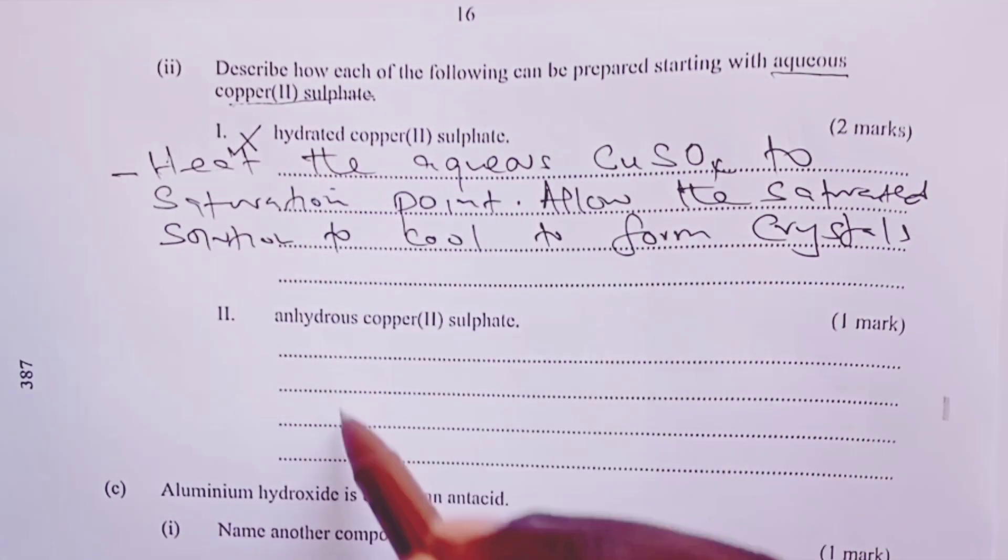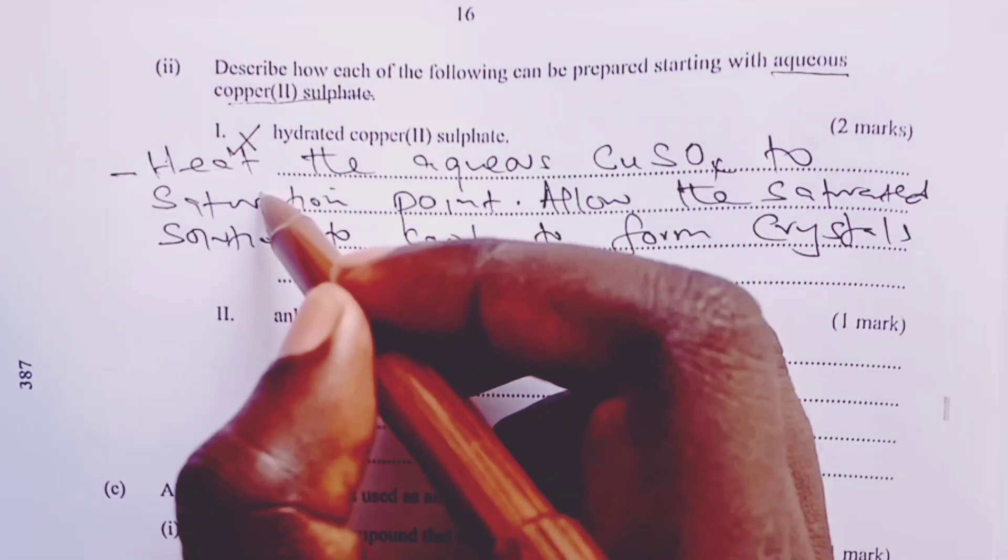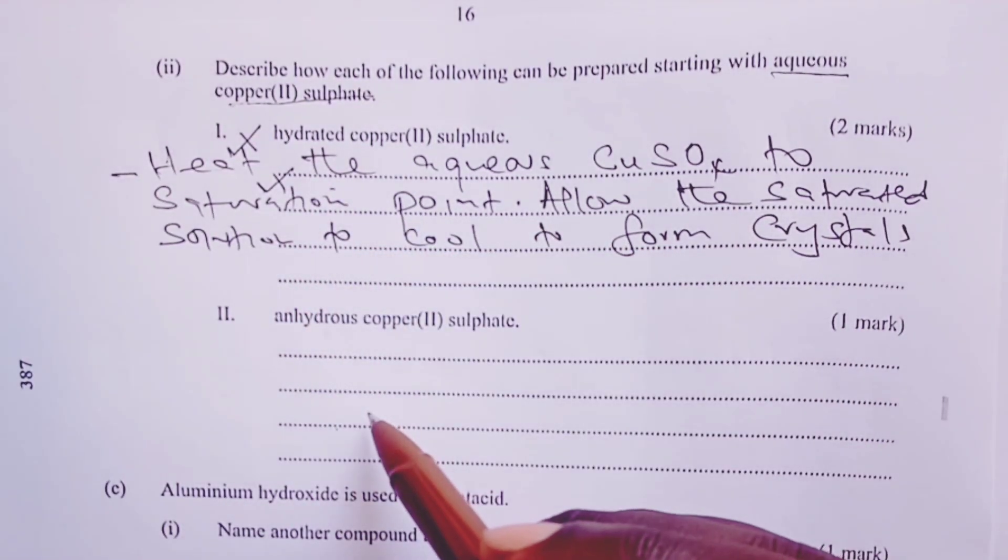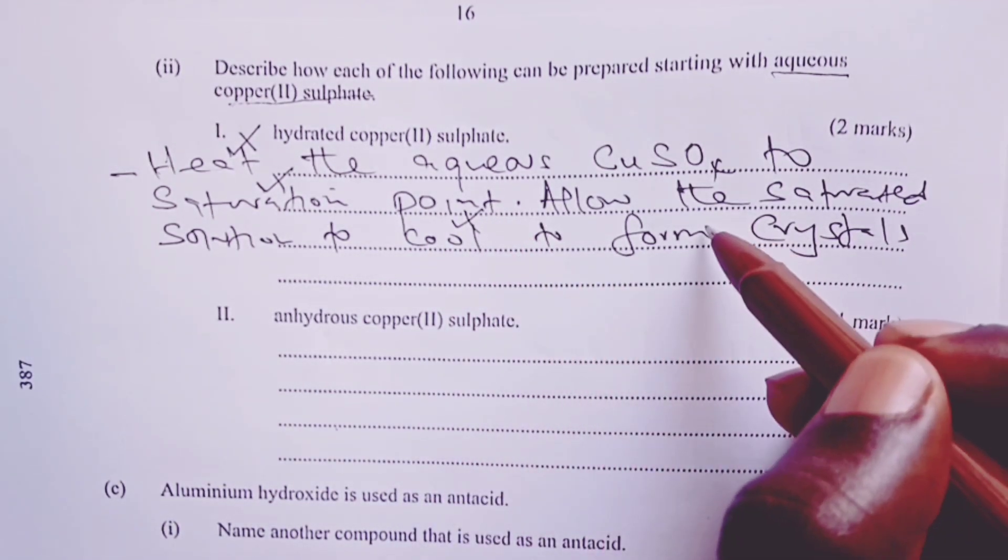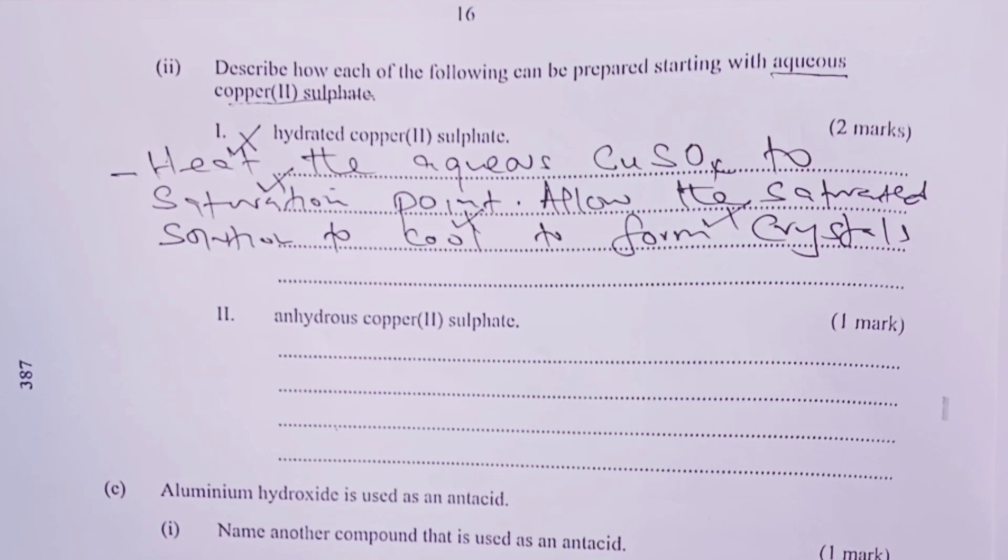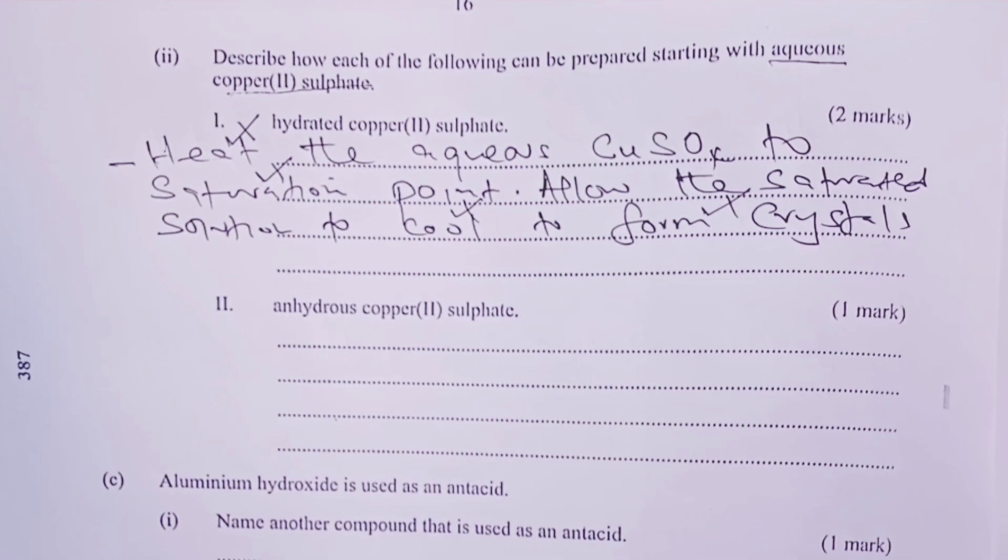So we shall award a half for heat, a half for reaching saturation point, a half for cooling, and another half for formation of crystals. Giving us a total of two marks for that section.